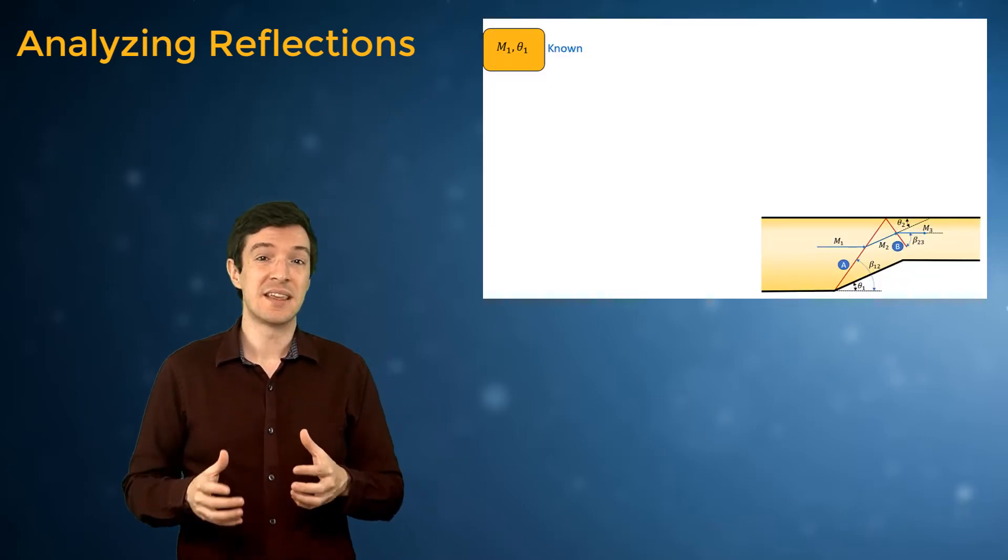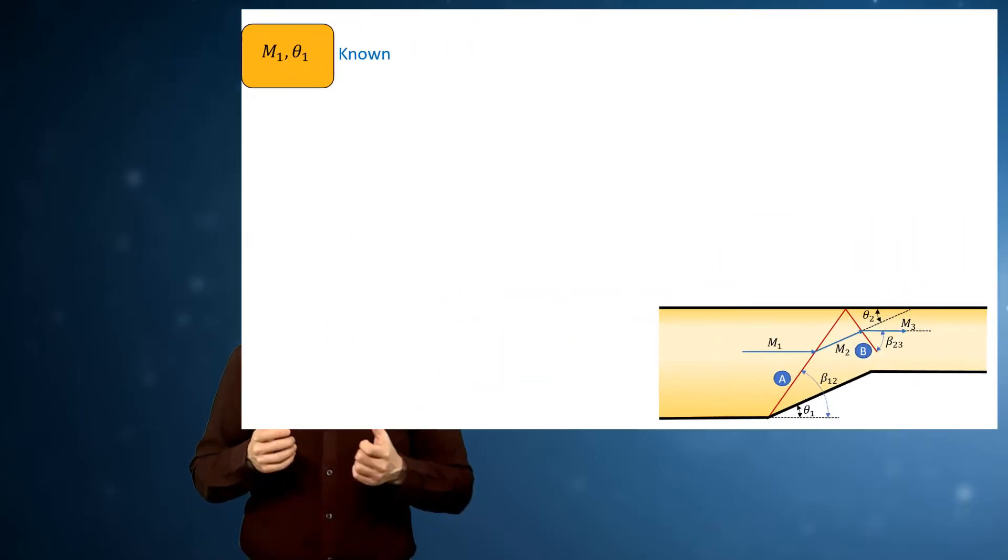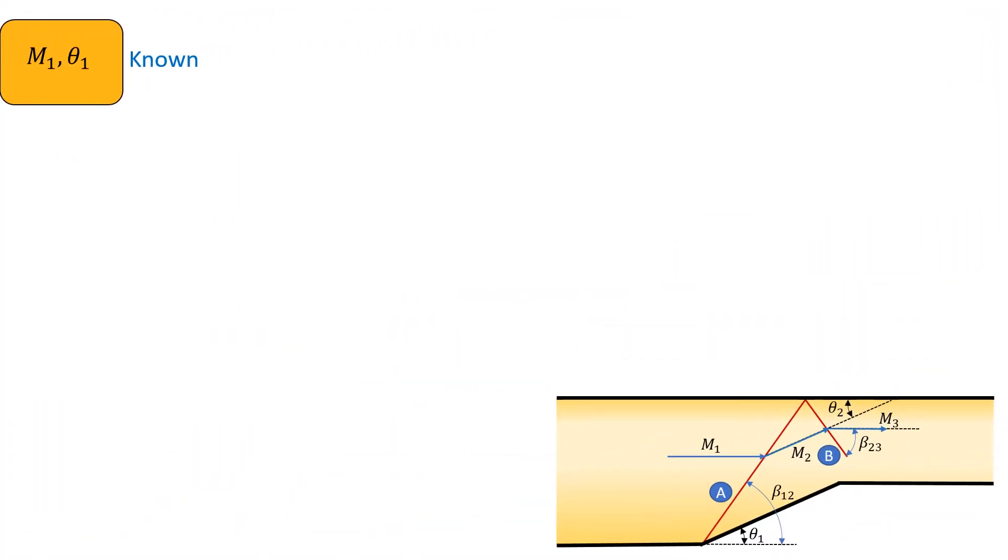Assume that M1 and theta 1 are known. Using the beta-theta Mach relation, we can find the shock angle.